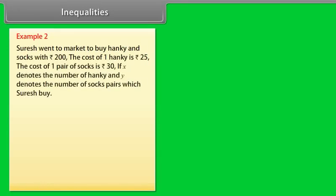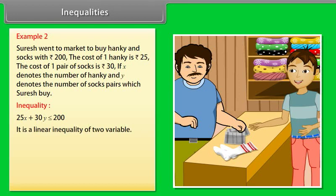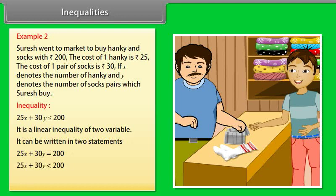Example 2: Suresh went to market to buy hanky and socks with rupees 200. The cost of one hanky is rupees 25 and the cost of one pair of socks is rupees 30. If x denotes the number of hanky and y denotes the number of socks pairs which Suresh buys, then we can represent the statement in inequality form as 25x + 30y ≤ 200. It is a linear inequality of two variables. It can be written in two statements: 25x + 30y = 200, and 25x + 30y < 200. Statement A is an equality in this case.